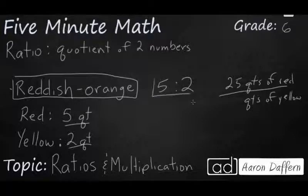Well, let's take our ratio here, 5 to 2, and let's go ahead and set it up as a fraction, 5 to 2. We know it's a ratio, so we're going to set this up as an equivalent fraction here. So we have 5 quarts of red to 25 quarts of red, 2 quarts of yellow to an unknown number of quarts of yellow.